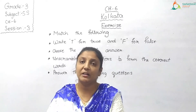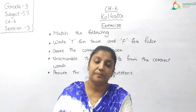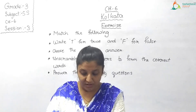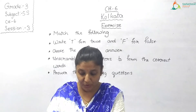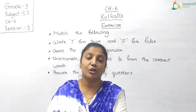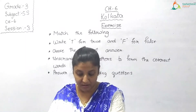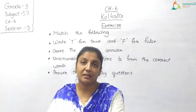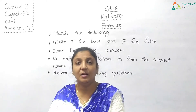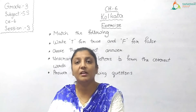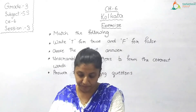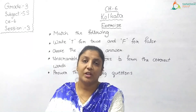Then, the history of Kolkata: three villages — Sutanuti, Gobindapur, and Kalikata — were joined together to form Calcutta in the year 1690. Then in the year 2000, the name was officially changed from Calcutta to Kolkata by the government.